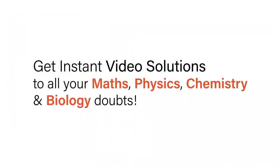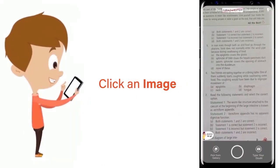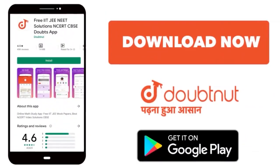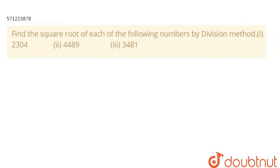With Doubtnut, get instant video solutions to all your math, physics, chemistry and biology doubts. Just click the image of the question, crop the question, and get instant video solution. Here we have the question which says find the square root of each of the following numbers by division method. We have to find the square root of these numbers: 2304, 4489, and 3481 by division method.